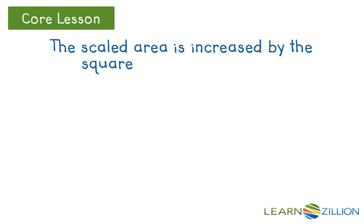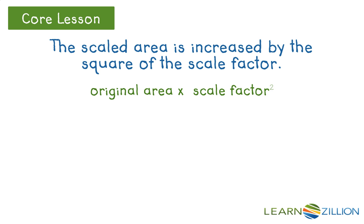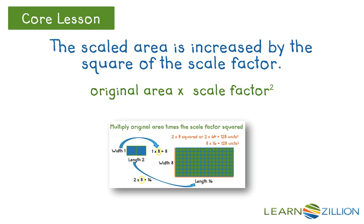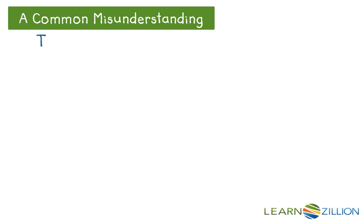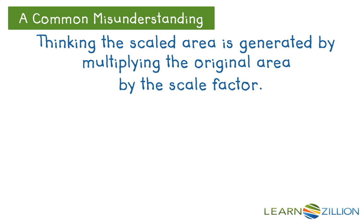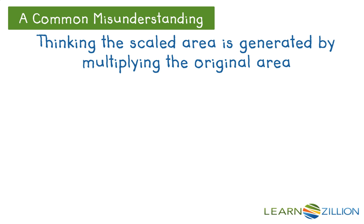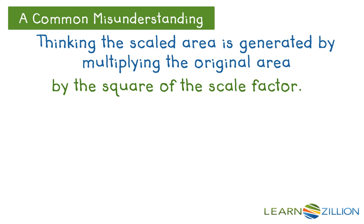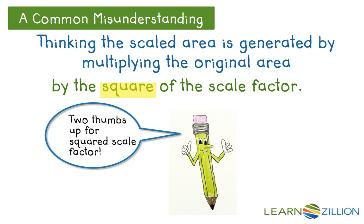Remember, the scaled area is increased by the square of the scale factor, because the scaled length and width have both been increased by the scale factor. Multiply the original area times the scale factor squared. A common misunderstanding is thinking the scaled area is generated by multiplying the original area by the scale factor alone — this is incorrect. The original area must be multiplied by the square of the scale factor, because the scale factor has increased both the length and width of the scaled figure. Remember to use the square of the scale factor when generating scaled area.